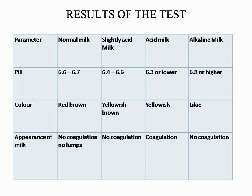Normal milk: pH 6.6–6.7, color red-brown, no coagulation, no lumps. Slightly acid milk: pH 6.4–6.6, color yellowish-brown, with coagulation. Acid milk: pH 6.3, color yellowish, with coagulation. Alkaline milk: pH 6.8 or higher, color lilac, no coagulation.